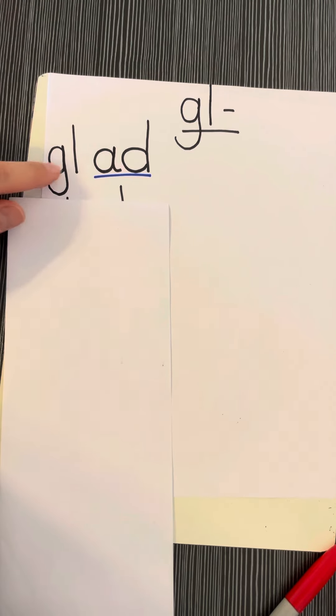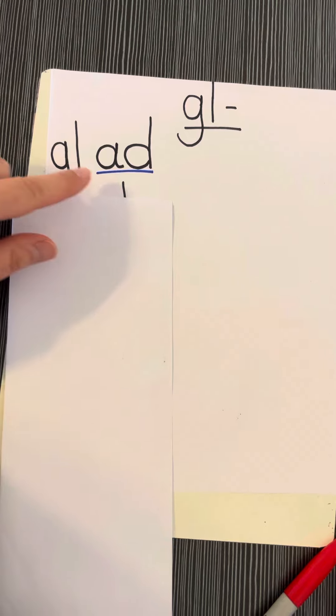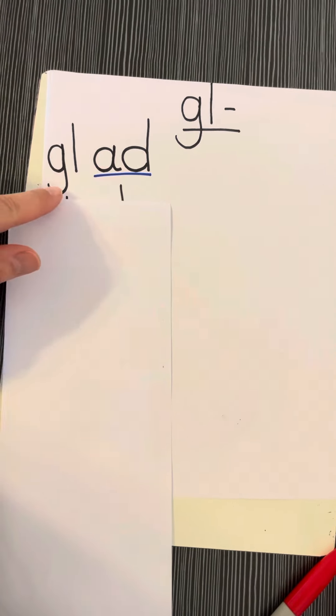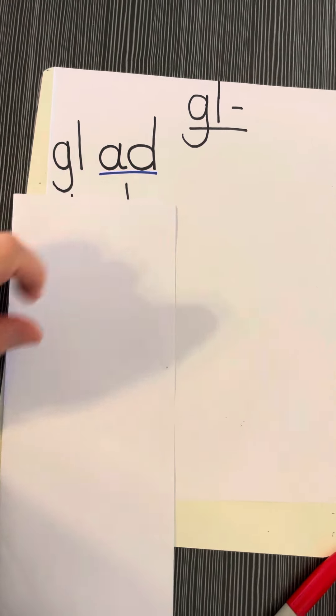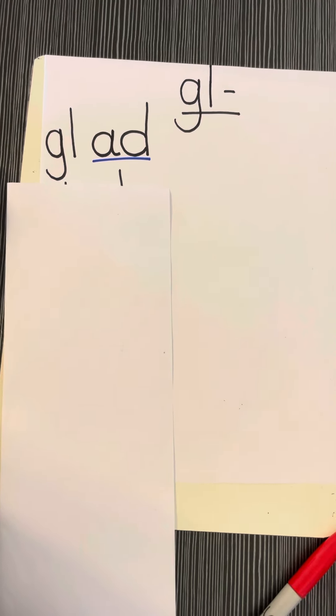All right, we have GL. A says 'ah', D says 'duh'. GL says 'ghoul', 'ah', 'duh'. Ghoul-ah-duh, ad, glad, glad. You're happy, you're relieved, you're glad.